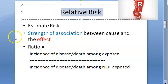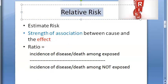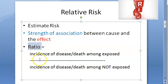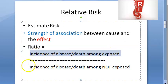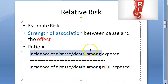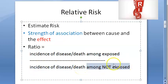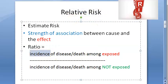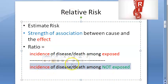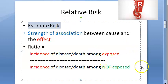In this video, let us look at relative risk. Basically, relative risk is trying to estimate the risk — it is a ratio, so it is a fraction: incidence of disease among exposed divided by incidence of disease among not exposed. In both cases there are incidences, and the ratio of these gives you the relative risk. This is also called the risk ratio.